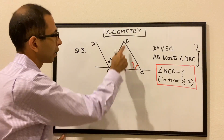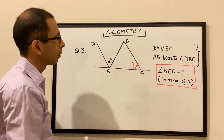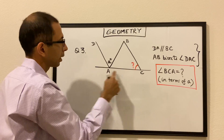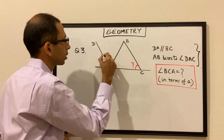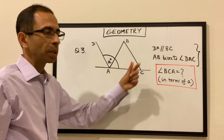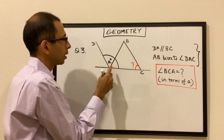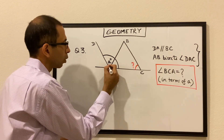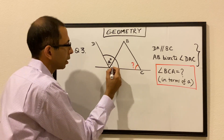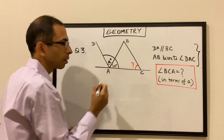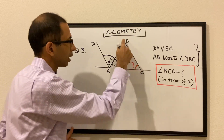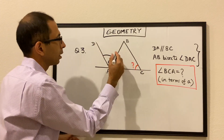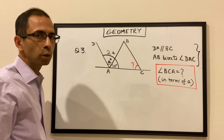Now question 3: DA is parallel to BC, so these two lines are parallel. And AB bisects angle DAC. So this line bisects angle DAC — what is the meaning of bisect? Basically it means that this line cuts this overall angle into two equal parts. So if this small angle is given to be a, this angle would also be a. Hence the overall angle DAC is nothing but 2a degrees.